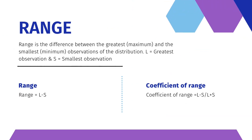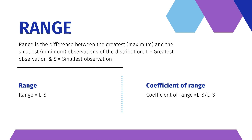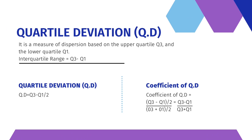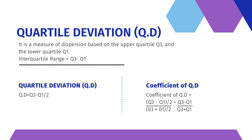Range is the difference between the greatest (maximum) and the smallest (minimum) observations of the distribution, where L equals the greatest observation and S equals the smallest. Quartile deviation (Q.D.) is a measure of dispersion based on the upper quartile Q3 and the lower quartile Q1.